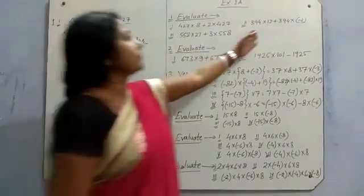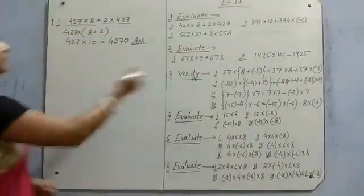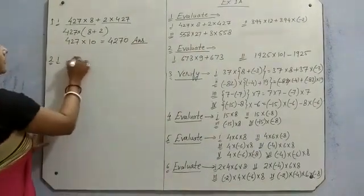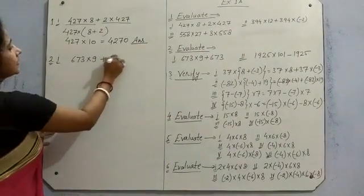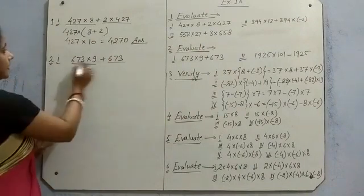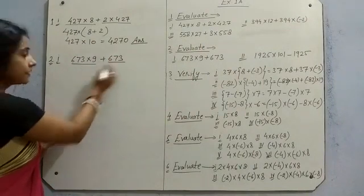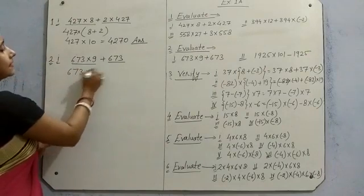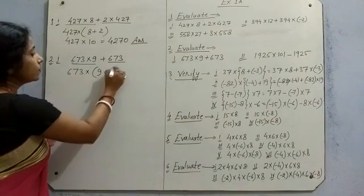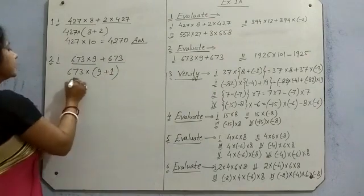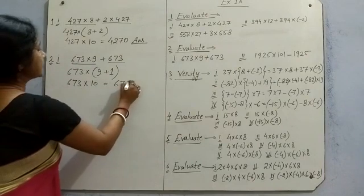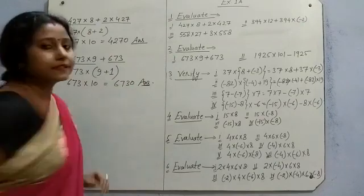So same thing you have to do here also and in this question also. Second first question. See, 673 into 9 plus 673. Here also two terms, this and this. Here 673 you can see it is common. So take common and inside what is demanding here 9 and here nothing is there with it. So here is 1 hidden. 673 into 10. So this will become 6730. This is the answer.